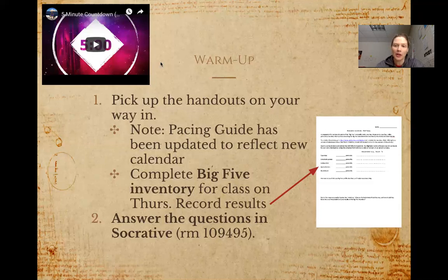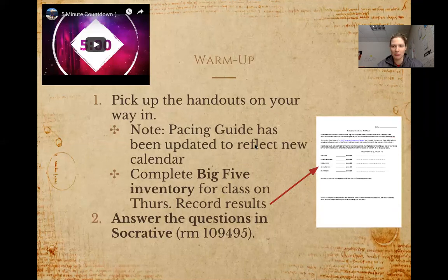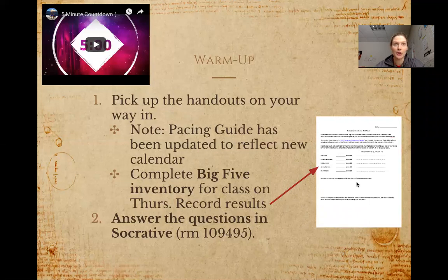On Monday, people will be getting a bunch of resources — their handouts for the week, including their study guide for this unit's test, and an updated copy of the pacing guide. If you're back on B-day Tuesday, you might stop by my classroom to pick that stuff up, since paper copies might be more helpful. I'll also be drawing attention to a handout posted in Canvas, and I'm going to be asking people to complete a Big Five personality inventory for Thursday's class — Friday for B-day students.